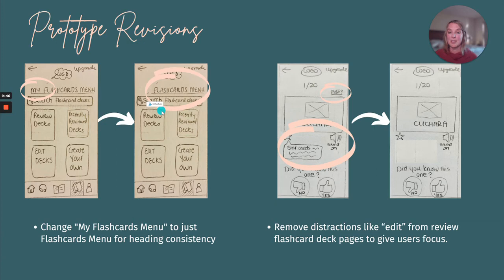We also added text underneath our logos to prevent any confusion as to where the student is going in the app. We streamlined our headings to make them consistent across the app. And we greatly simplified our flashcard revision pages because participants said it was just too busy and they couldn't focus on learning. So we took out the edit button and any pop-up information and kept it as simple as possible to promote focus for our students.